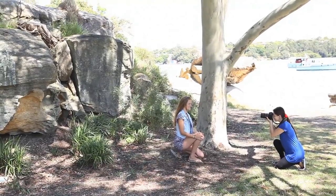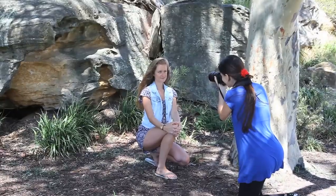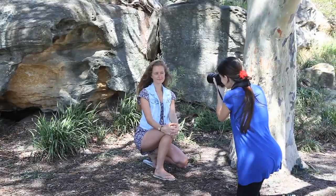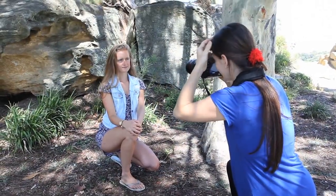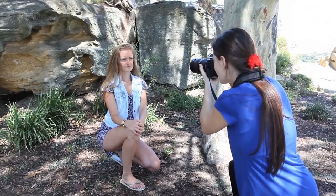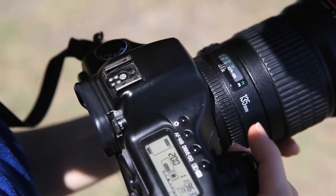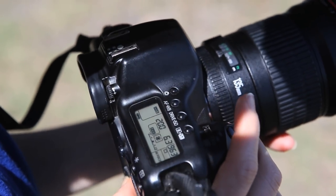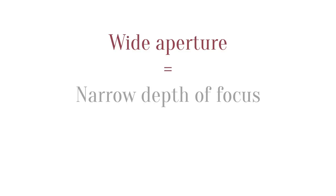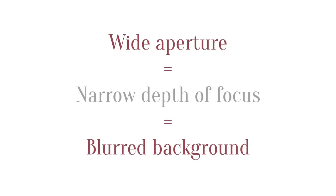First let's look at aperture. We're in the park and our subject is two or three meters in front of the rocks that make the background, shooting at 50 millimeters. This first shot uses an aperture of f11 — a fairly small aperture — and as you can see there's an element of blur but not very much. If we take the same shot at f4, a fairly wide aperture, the background is quite nicely blurred and the subject stands out in contrast. So the wider the aperture, the narrower the depth of focus and therefore the blurrier the background.